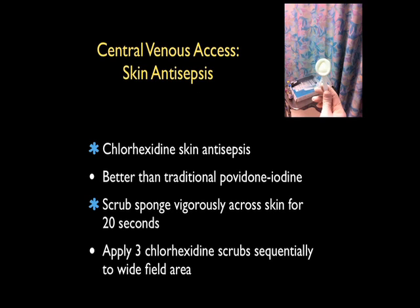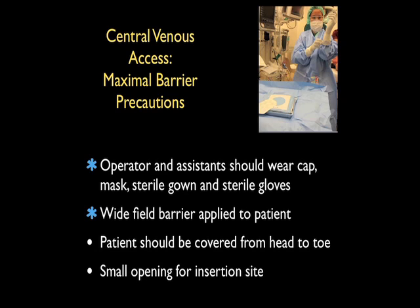The second step for decreasing the complication rate is adequate attention to skin antisepsis. Chlorhexidine is optimal, offering benefits over traditional povidone-iodine. Scrub the chlorhexidine sponge vigorously across the patient's skin for 20 seconds, applying three chlorhexidine scrubs sequentially to a wide field area. The third step is maximal barrier precautions: the operator and all assistants should wear a cap, mask, sterile gown, and sterile gloves throughout the procedure.